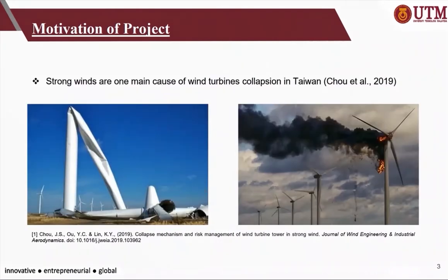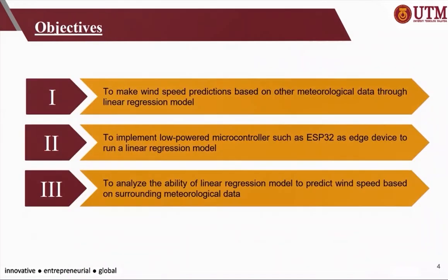In Taiwan, strong winds are one of the main causes of wind turbine collisions. When a wind turbine operates in strong wind, it has a chance of getting mechanical damage and accidents may occur. Monitoring wind speed will help to reduce the chances of such accidents.